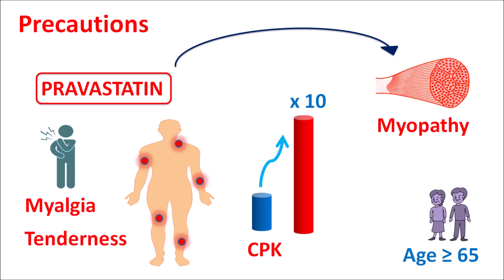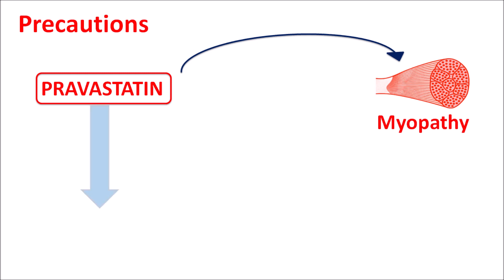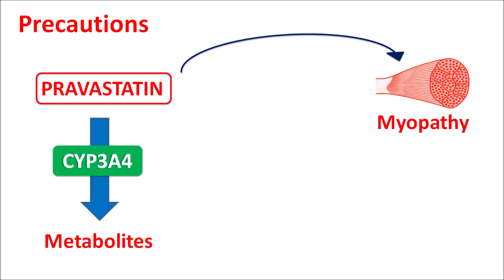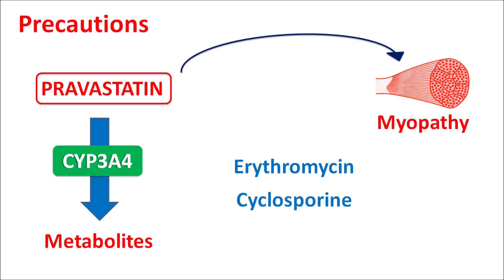In elderly patients over 65 years of age, or in patients with hypothyroidism, myopathy is more pronounced with pravastatin use. This drug is metabolized by the cytochrome P450 system, particularly CYP3A4. Drugs such as erythromycin, a macrolide antibiotic, and cyclosporine, an immunosuppressant, are strong inhibitors of CYP3A4. They can increase pravastatin levels, further increasing the risk of myopathy. Therefore, pravastatin should be given carefully when combined with these drugs.